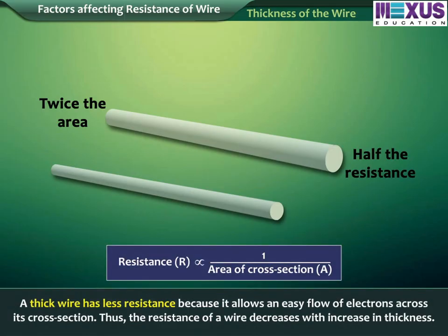Thickness of the wire. A thick wire has less resistance because it allows an easy flow of electrons across its cross-section. Thus, the resistance of a wire decreases with increase in thickness.